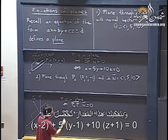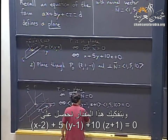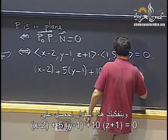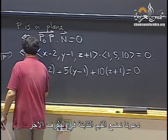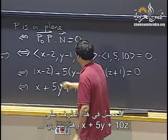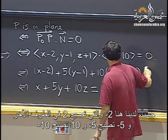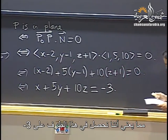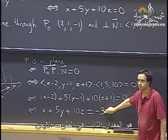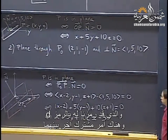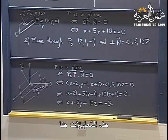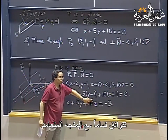Expanding this: we get x minus 2 plus 5 times y minus 1 plus 10 times z plus 1 equals zero. Putting the constants on the other side gives x plus 5y plus 10z equals 2 plus 5 minus 10, which is negative 3. The only thing that changes between these two equations is the constant term on the right-hand side. The coefficients of x, y, and z — 1, 5, and 10 — correspond exactly to the normal vector.